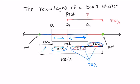25% between Q2 and Q3, and 25% between Q3 and my maximum. And again all of that adds to give me 100% of my data.